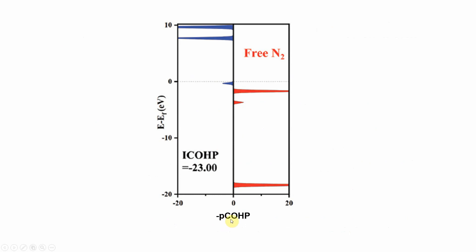This is the PCOHP plot of free N2 molecule. Zero is the Fermi level. Below is the bonding orbital of N2; the top is the anti-bonding orbital — basically the pi-star orbitals of N2. From the Fermi level, the anti-bonding orbitals are well separated from the bonding orbitals — this is the reason free N2 molecules are so strong in nature. They also calculated the ICOHP values, showing a very high value of minus 23, indicating this is a very strong, inert molecule. In this video, I will show how to make input files and analyze results.